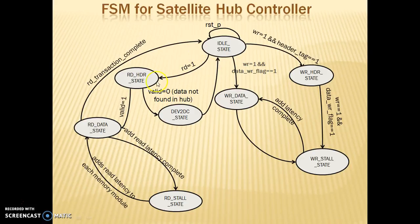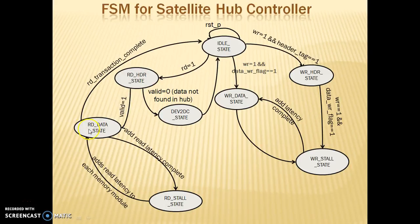If the read signal is high, the header is first checked in the Read Header state. This state determines whether the requested data is present in the hub or not. If it is not present, the FSM transitions to the Device-to-DC state, meaning the data center is enabled and the device will request data directly from the data center. If the header is present in the hub with a valid bit, the FSM goes to the Read Data state, and stalling is performed according to the memory type accessed.